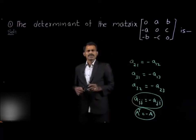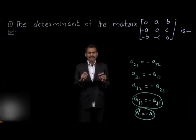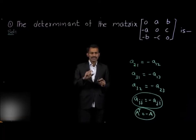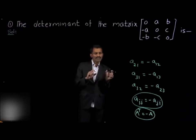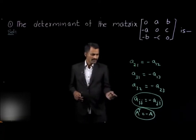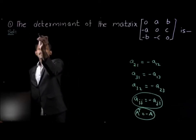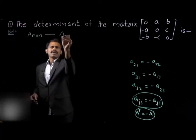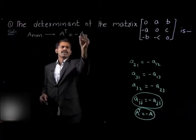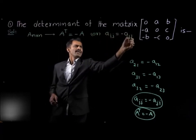So finally, the given matrix is a skew symmetric matrix. From this we can say that the determinant of a skew symmetric matrix with odd order is always singular. The condition for a skew symmetric matrix is A transpose equal to minus A, or equivalently Aᵢⱼ = −Aⱼᵢ.